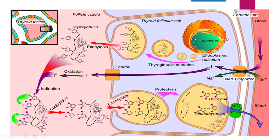To summarize the process: the rough endoplasmic reticulum synthesizes thyroglobulin, which gets secreted by exocytosis into the colloid in the lumen of the thyroid follicle. Simultaneously, sodium-iodide symporters actively allow iodide (I⁻) through pendrin to enter the lumen. In the lumen, oxidation takes place from iodide (I⁻) to iodine (I⁰) by the enzyme thyroid peroxidase (TP).